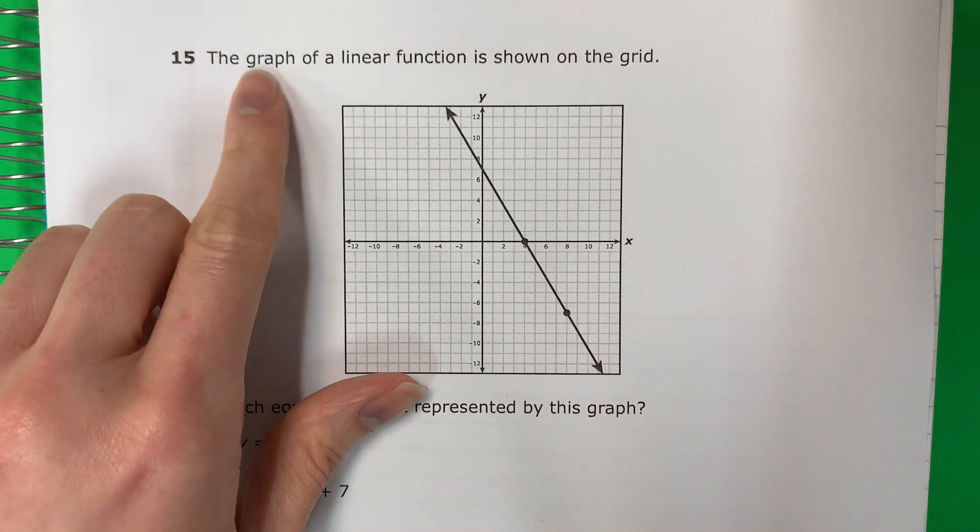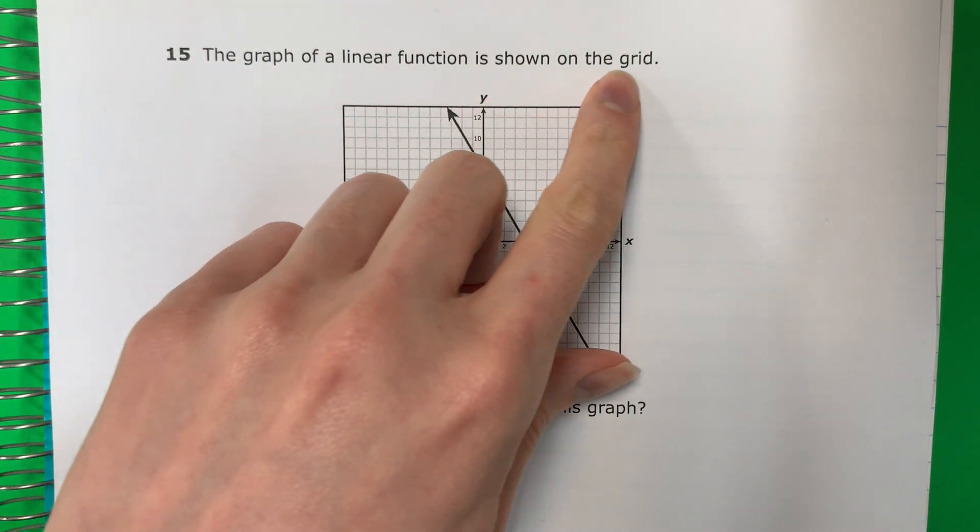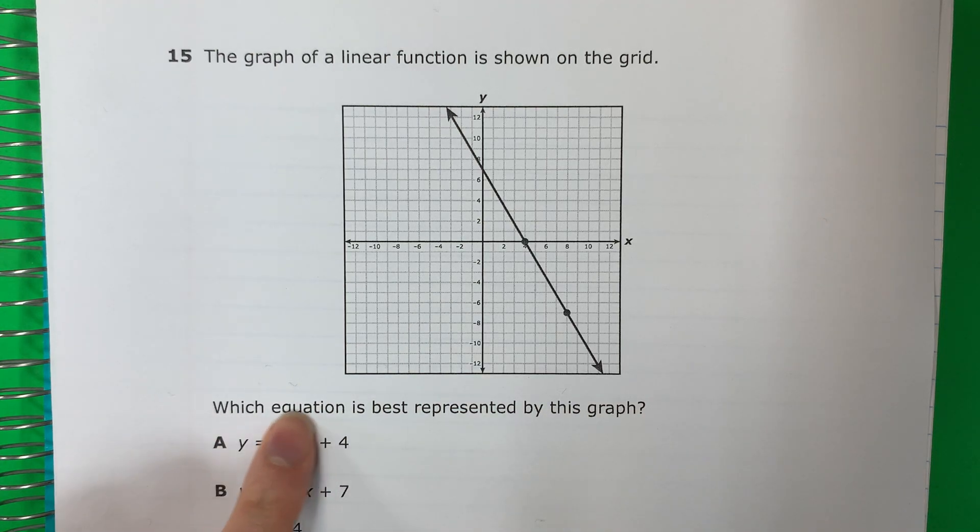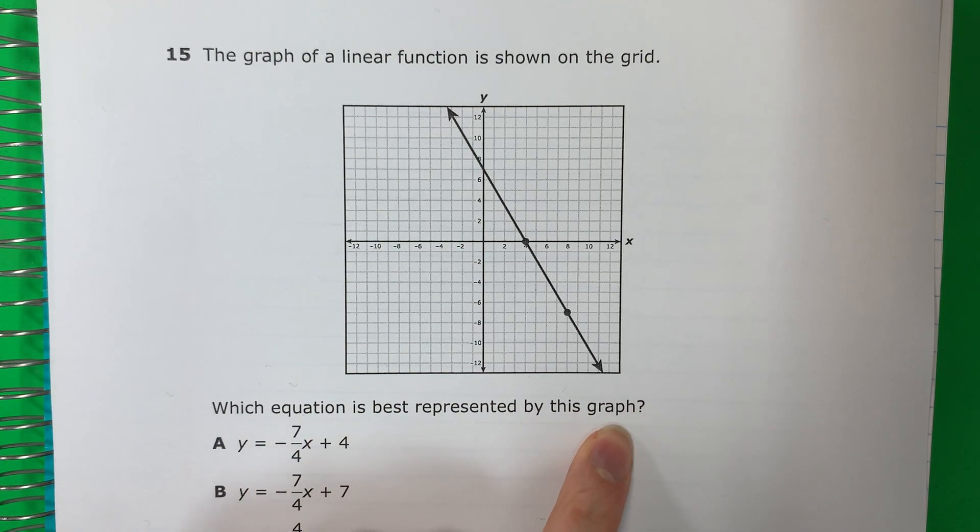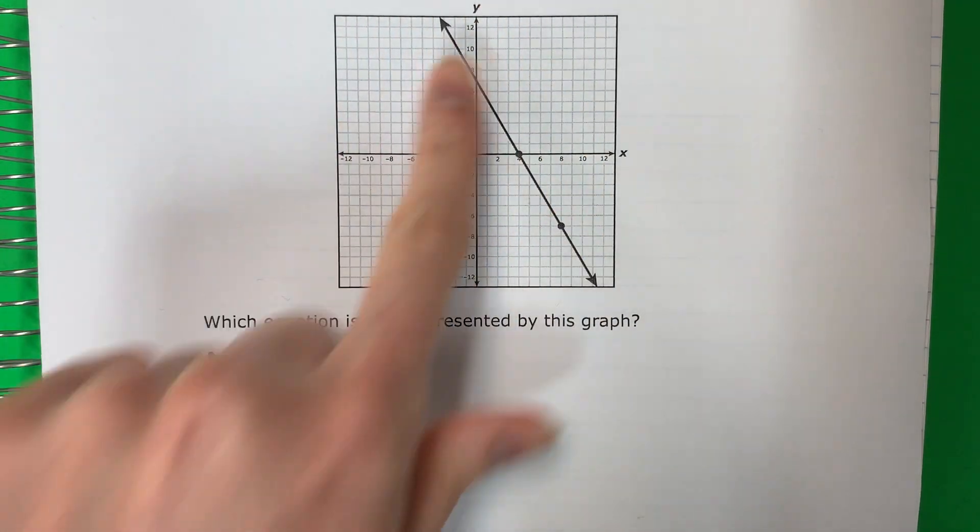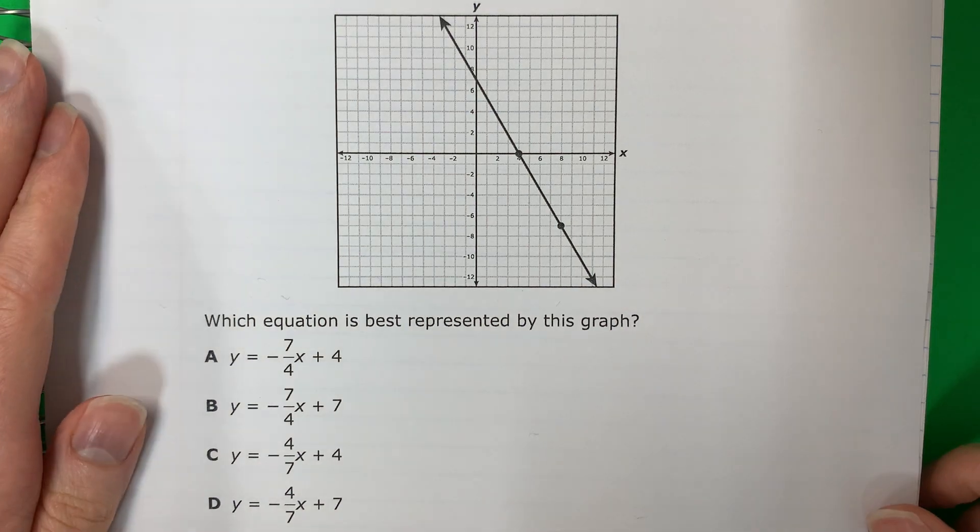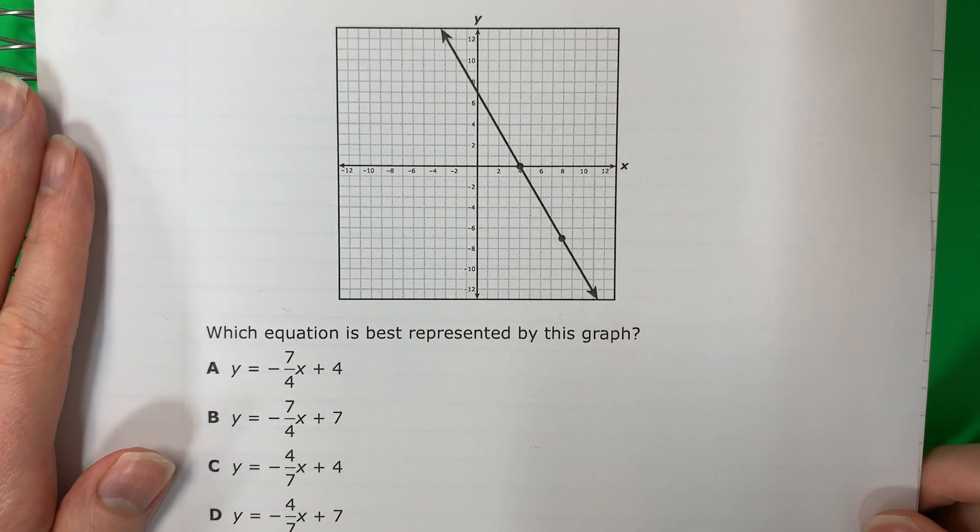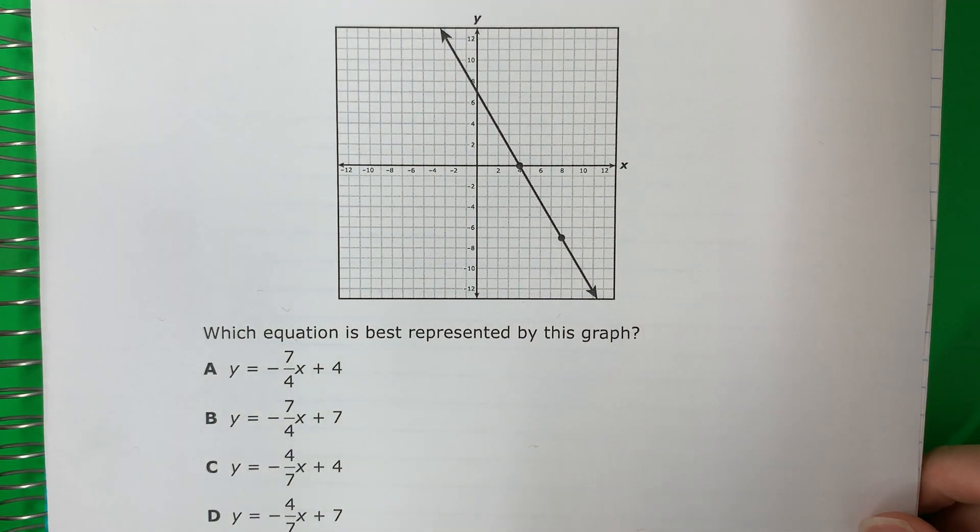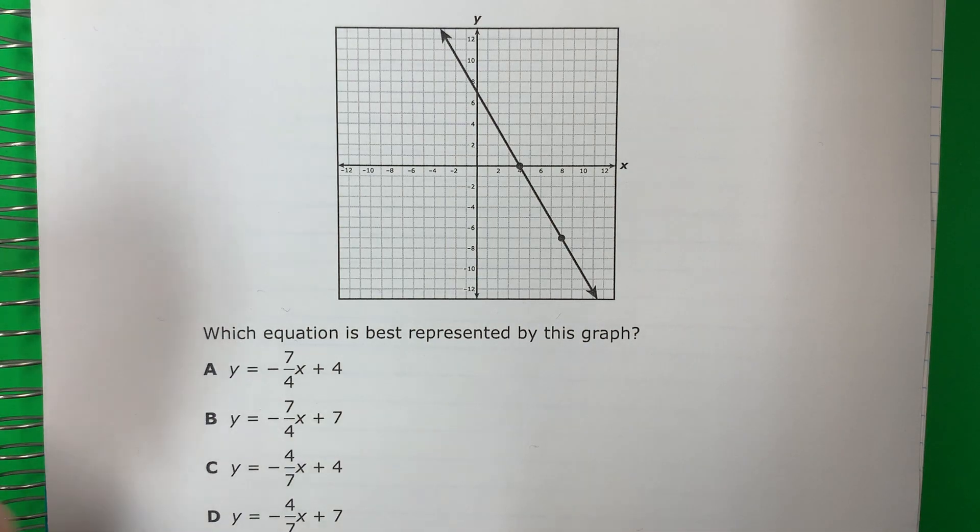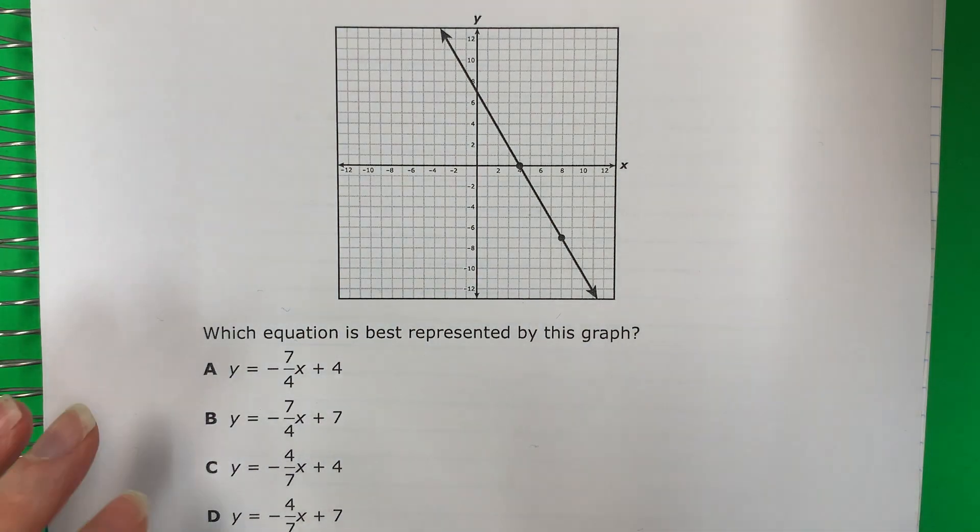Question 15. The graph of a linear function is shown on the grid. Which equation is best represented by this graph? So I have a graph and I need to make an equation in slope-intercept form. I'm going to show you two ways to do this. The first way will be by hand with formulas and the second way will be quickly through the graph.